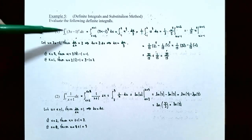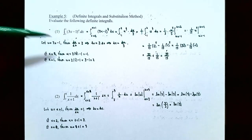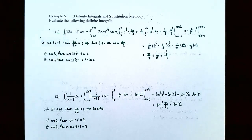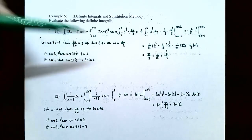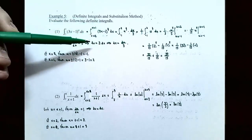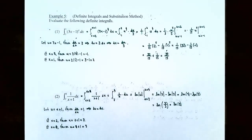Let u be the inside function, so u equals 3x minus 1. Taking the derivative: du/dx equals 3, the derivative of 3x minus 1. Multiplying both sides by dx gives du equals 3 times dx. Solving for dx gives dx equals du divided by 3. This is just the standard substitution method to change everything to be in terms of u. What's new is that we also need to change the limits of integration to be in terms of u.